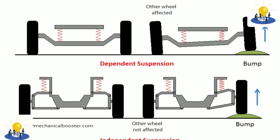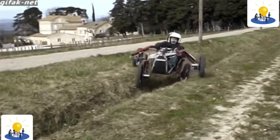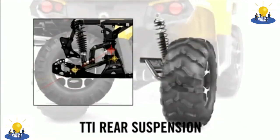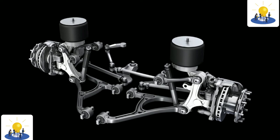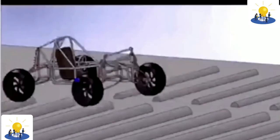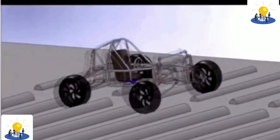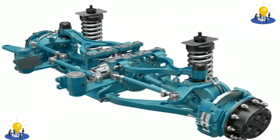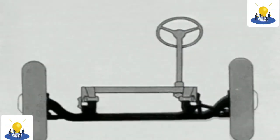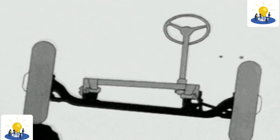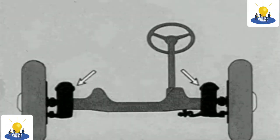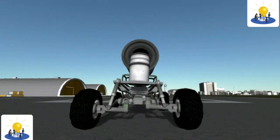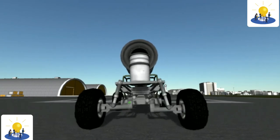Independent suspension is any automobile suspension system that allows each wheel on the same axle to move vertically in reaction to a road bump independently of the others. This is contrasted with a beam or solid axle system in which the wheels are linked. Movement on one side does not affect the wheel on the other side. It is common for the left and right sides to be connected with anti-roll bars, which tie the left and right suspension spring rates together but not their motion. Most modern vehicles have independent front suspension (IFS), and many also have independent rear suspension (IRS).